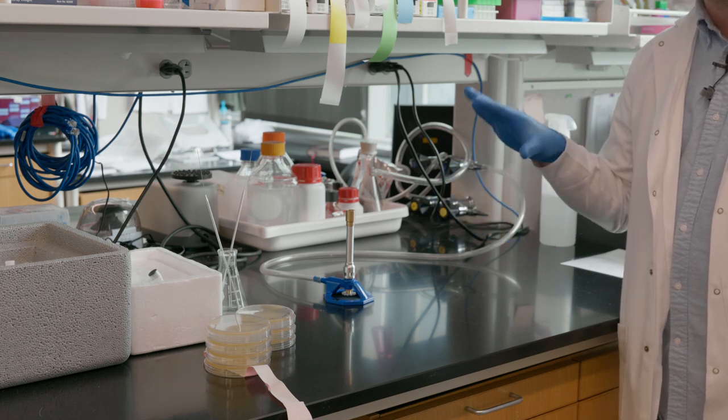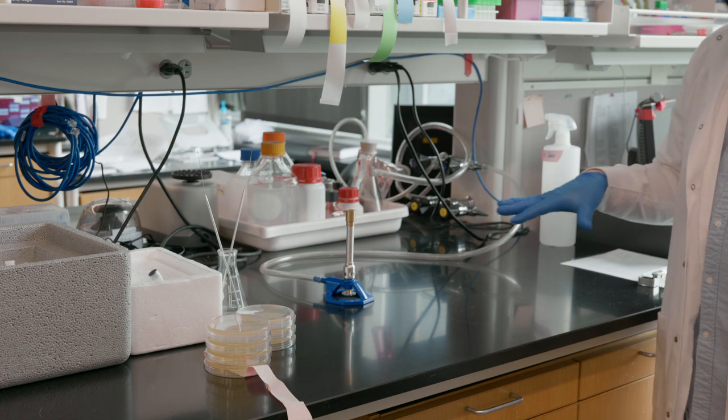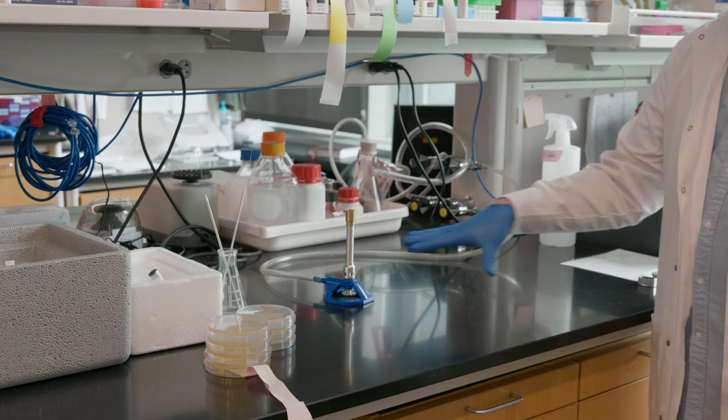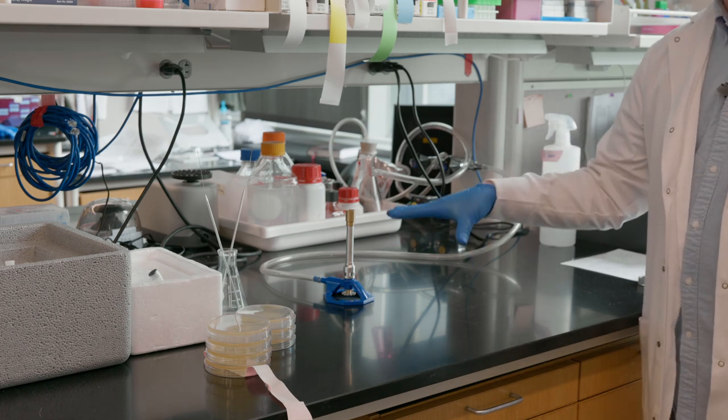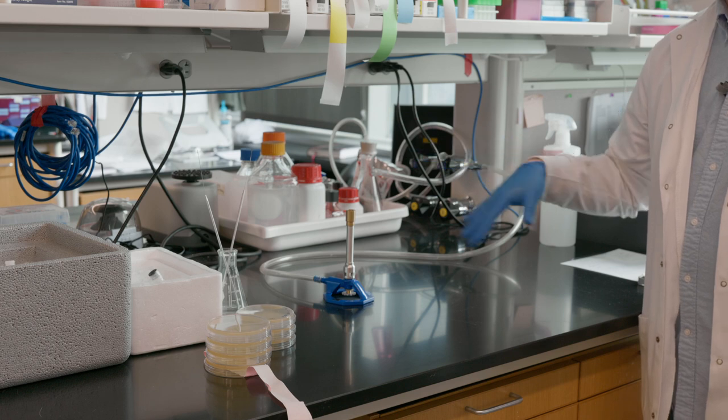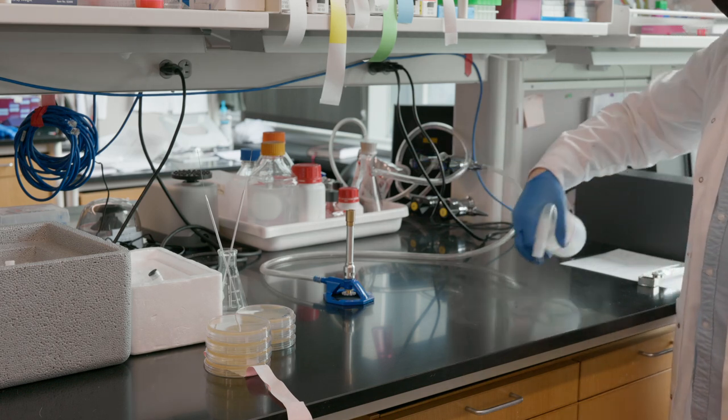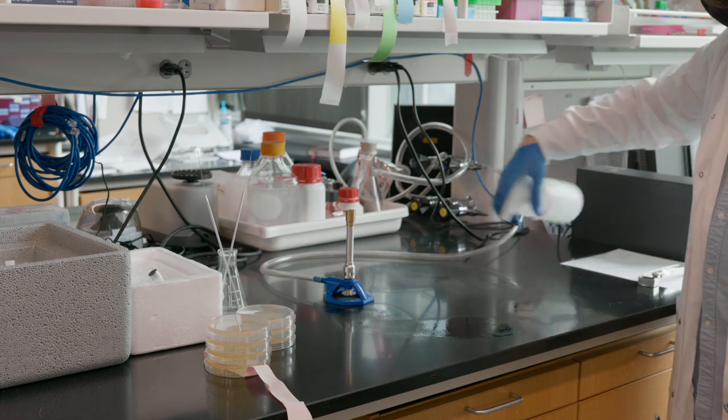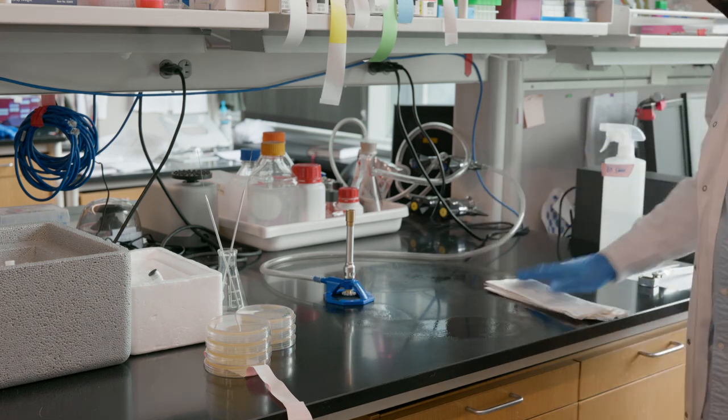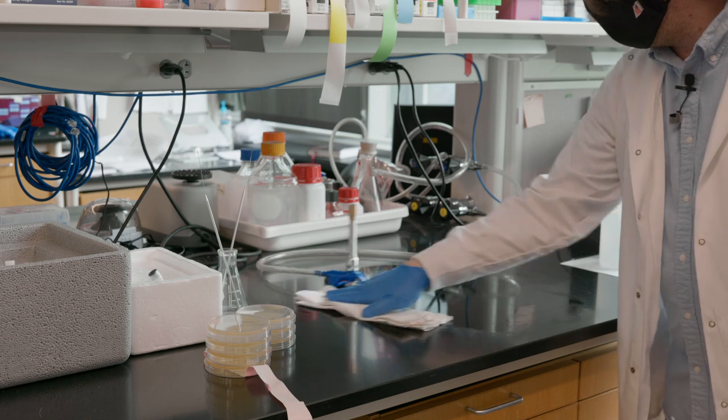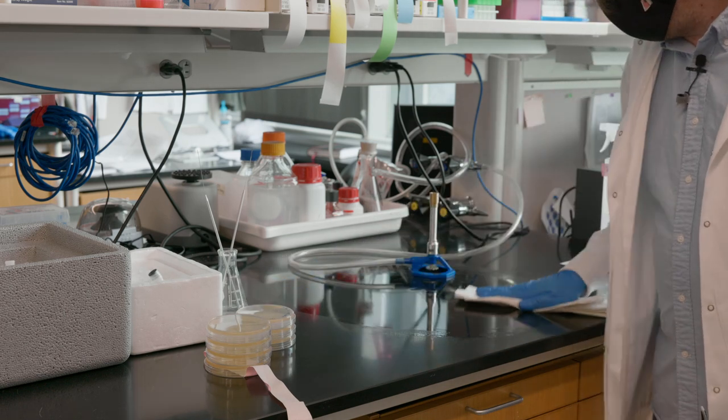So we're going to start by spraying down the area and then turning on the Bunsen burner. The Bunsen burner will allow the air to circulate and prevent the dust particles in the air from settling into your plates. So first, like that, this whole area, good solid wipe down.